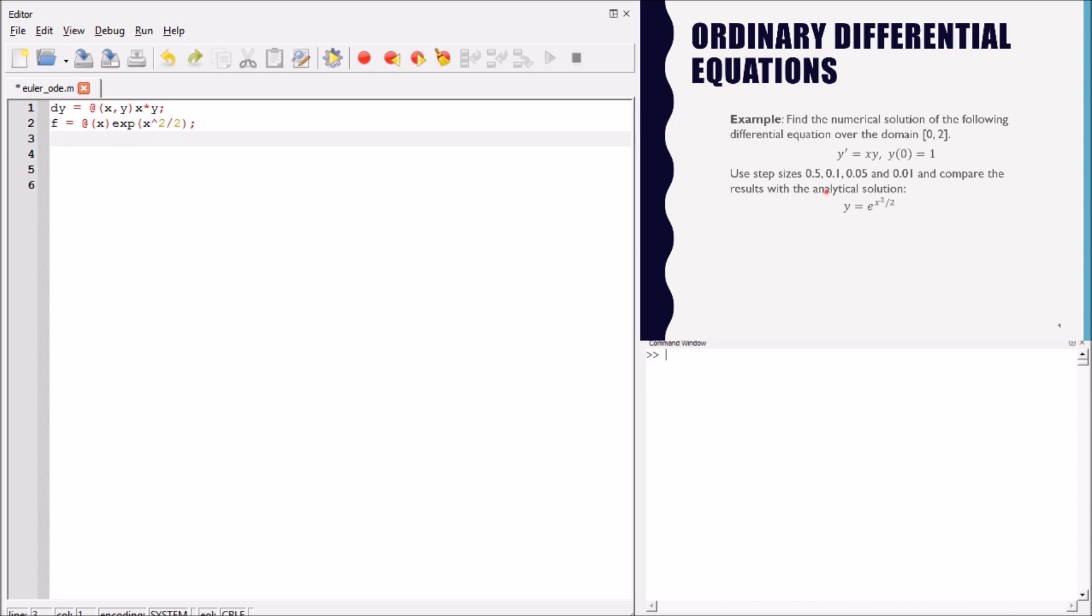We define the solution here just for comparison, because in real-life problems, you don't have the analytical solution. That's why you need to solve the problem by using the numerical method. But here, just to compare the two methods. We have the initial point of the interval, the final point of the interval, or the domain of the solution.